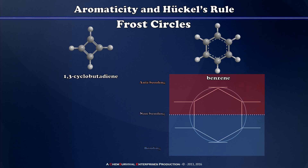When I take the six pi electrons from benzene and populate this Frost circle diagram, all six pi electrons make their way into bonding molecular orbitals, meaning there is an energetic benefit to having this pi system conjugated. For this reason, benzene will lay flat and align all the p orbitals of its atoms within the ring so that these electrons can have free run of the entire ring, thereby creating this aromatic situation.